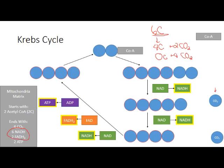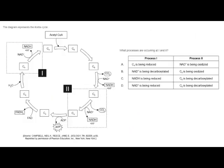The electron transport chain — also called the respiratory chain — cannot be discussed properly without talking about chemiosmosis. Chemiosmosis involves the movement of ions along concentration gradients. The matrix of the mitochondria has many protons, and those protons pass via protein carriers, moving from the matrix to the intermembrane space. Along the membrane, we have what we call ATP synthase. The hydrogen ions or protons move from the intermembrane space back to the matrix via the ATP synthase.